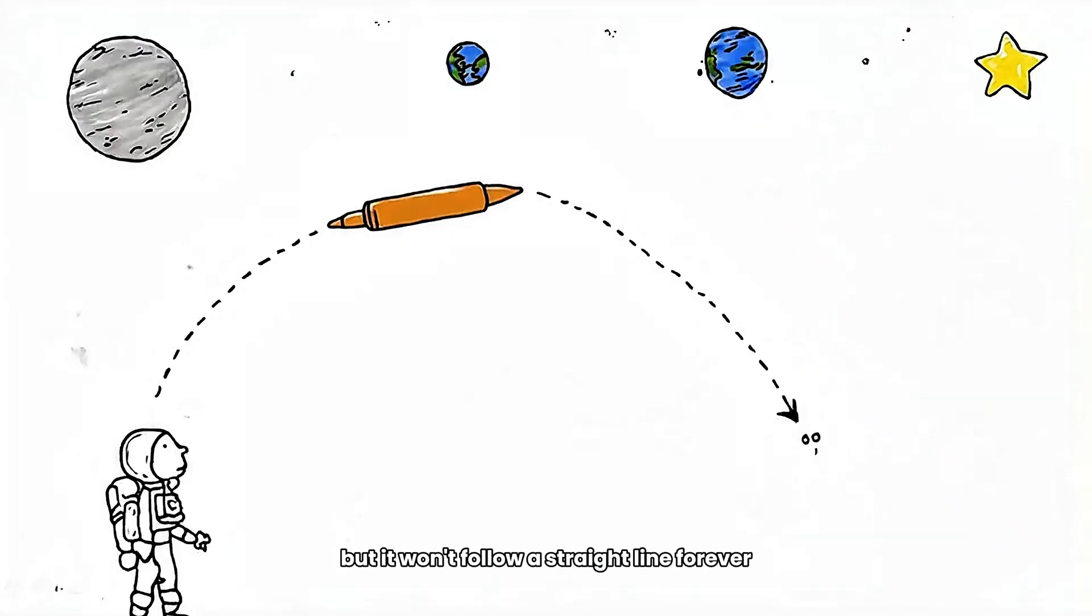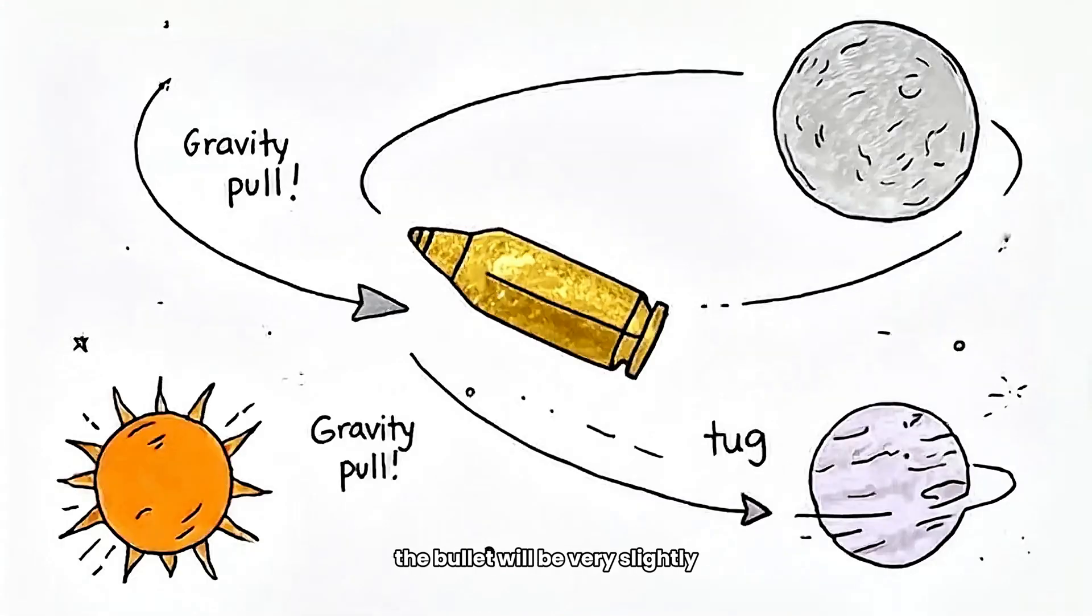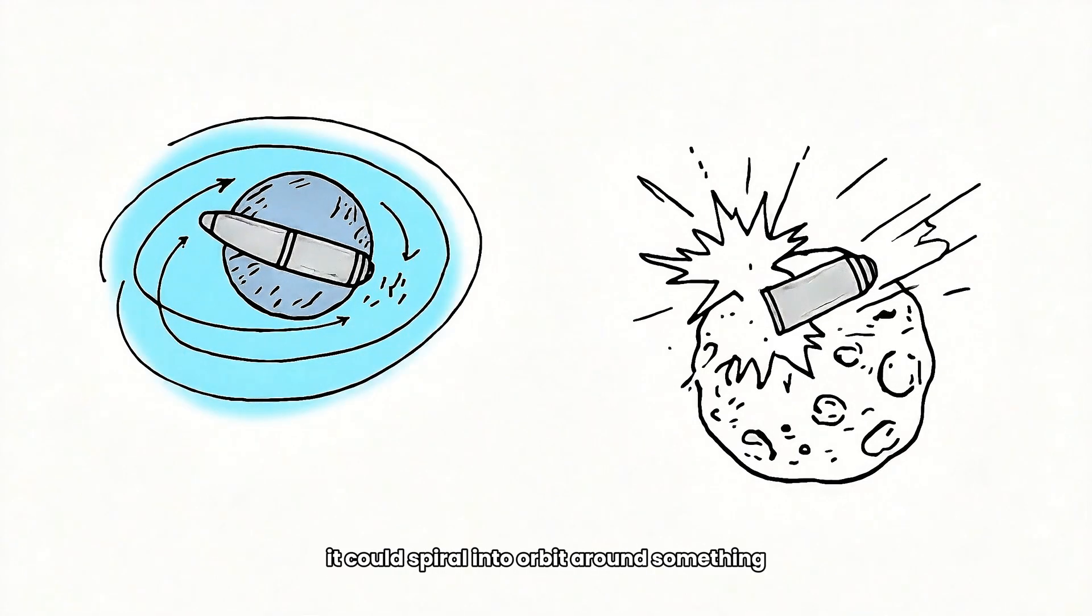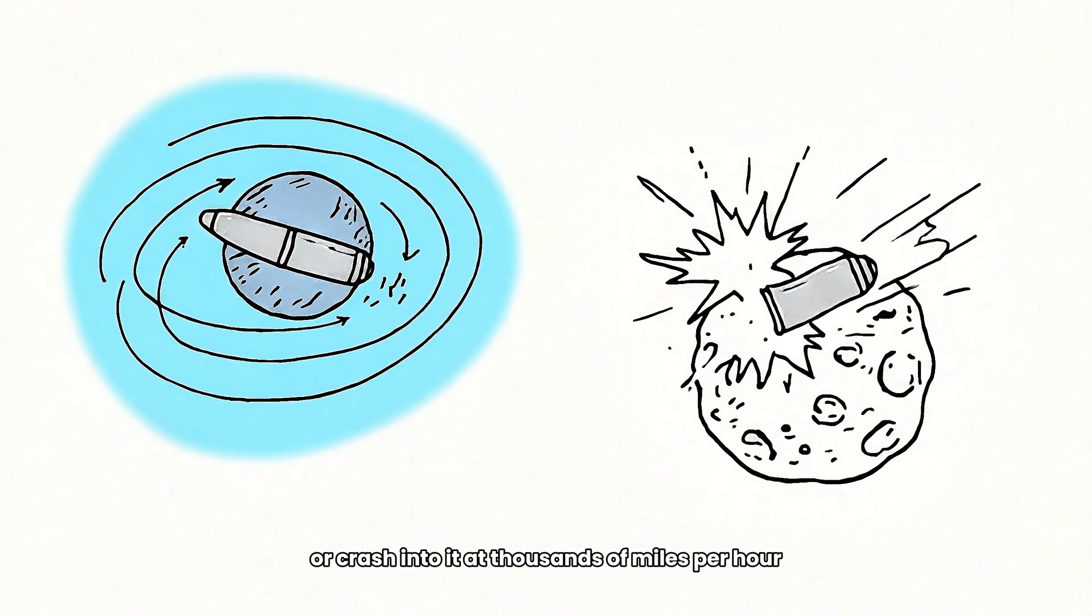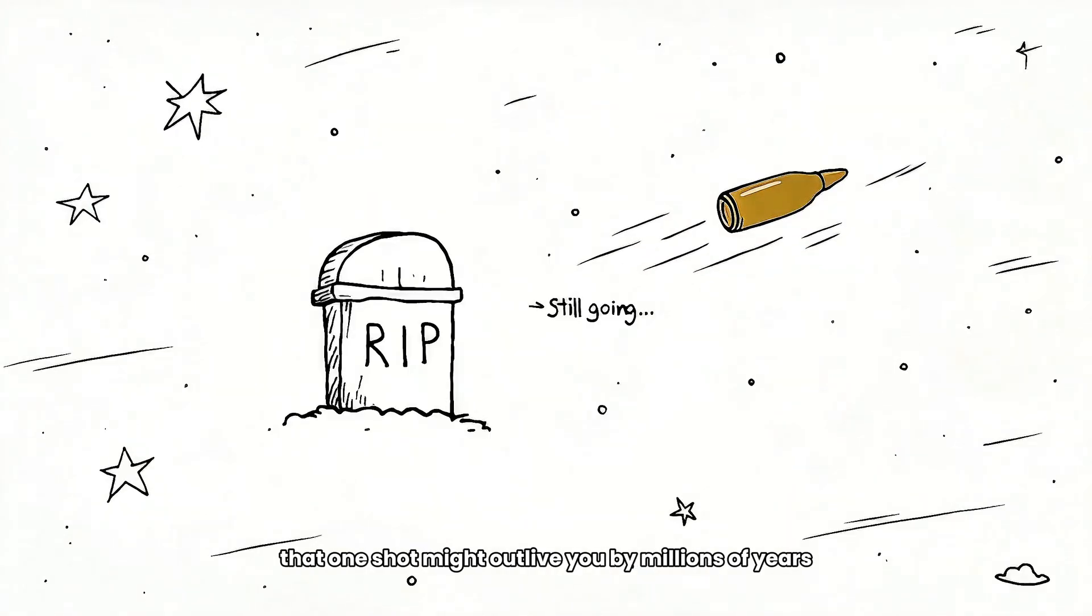But it won't follow a straight line forever. Why? Because space has gravity. The bullet will be very slightly pulled by nearby objects. Planets, stars, even moons. Given enough time, it could spiral into orbit around something, or crash into it at thousands of miles per hour. That one shot might outlive you by millions of years.